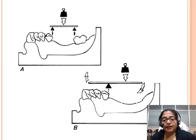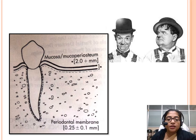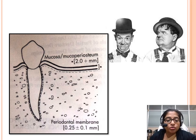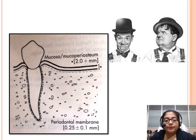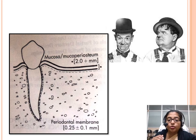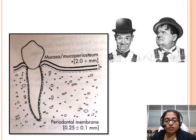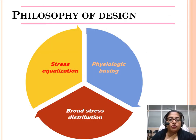The principles vary for both because the compression of the mucosa and the periodontal ligament differ significantly. The compressibility of the periodontal ligament is 0.25 millimeters, and the compressibility of the mucosa is 2 millimeters. This is a huge difference, and that is why the design considerations are different for tooth-supported versus tooth-and-tissue-supported partial dentures.